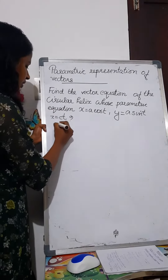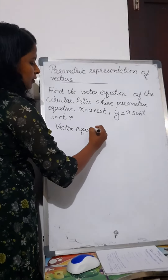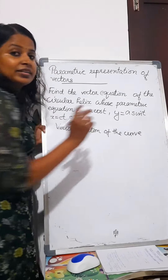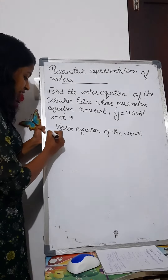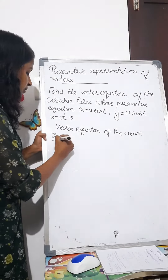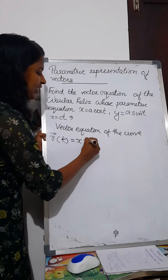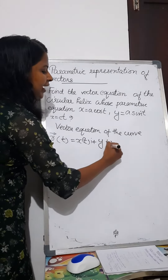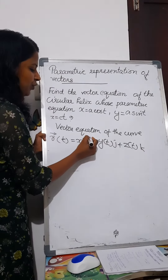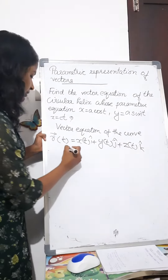The vector equation of the curve — that is, the position vector r. The vector equation of the curve is denoted as vector r, that is r of t, which is equal to x of t i-cap plus y of t j-cap plus z of t k-cap.